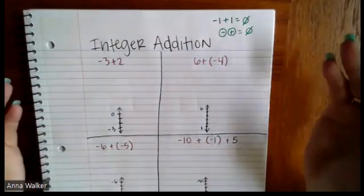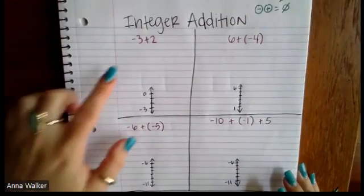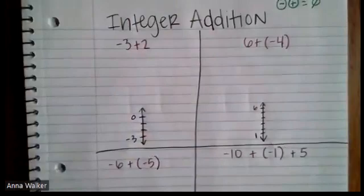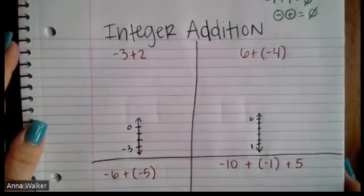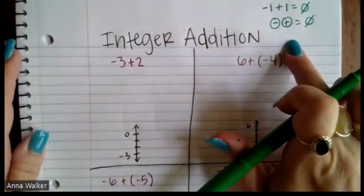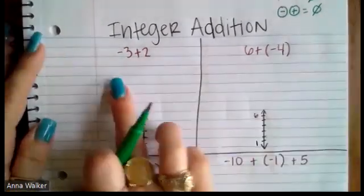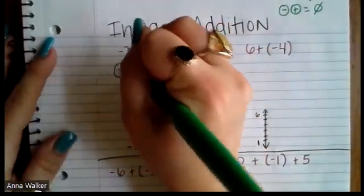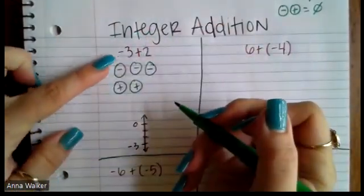Let's look at some examples. I'm going to zoom in so we can see these a little better. We have the example negative three plus two. I'm going to model it using counters — showing how many negatives and how many positives are in this problem — and we're going to use the idea of zero pairs. So I have three negatives and two positives: negative three plus two.